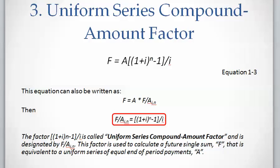This factor is called uniform series compound amount factor, and it is used to calculate the future single sum F that is equivalent to uniform series of equal end of period payments A.